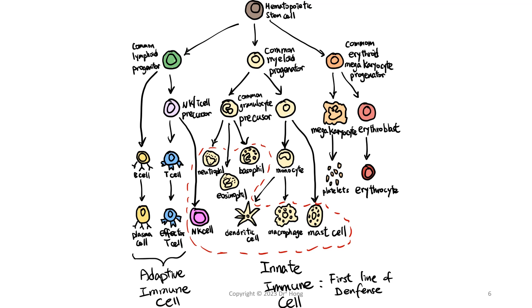B cells and T cells are part of the adaptive or acquired immune system. On the other hand, NK cells can be grouped into the innate immune cells, including neutrophils, basophils, eosinophils, dendritic cells, macrophages, and mast cells. These are considered our innate immune cells, which is the first line of defense.